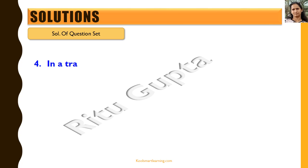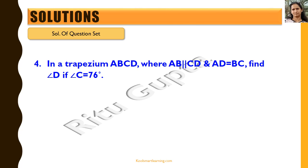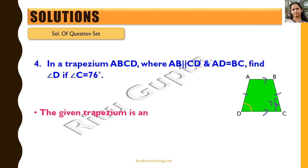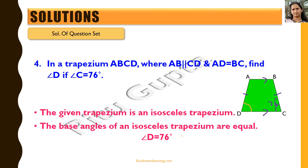Let us move on to the fourth question. In trapezium ABCD where AB is parallel to CD and AD is equal to BC, find angle D if angle C is equal to 76 degrees. The given trapezium is an isosceles trapezium because one pair of sides is parallel and the non-parallel sides are equal. For an isosceles trapezium, angle C equals angle D, so angle D is equal to 76 degrees.